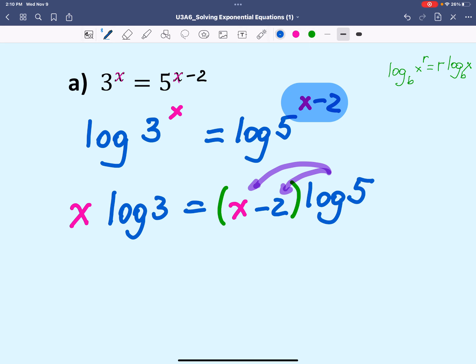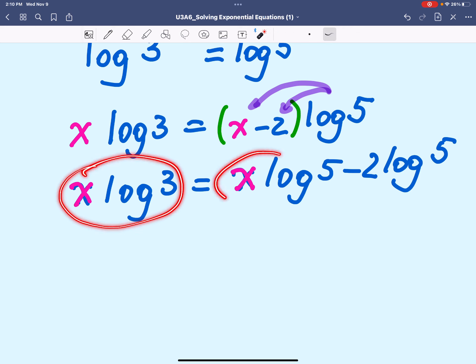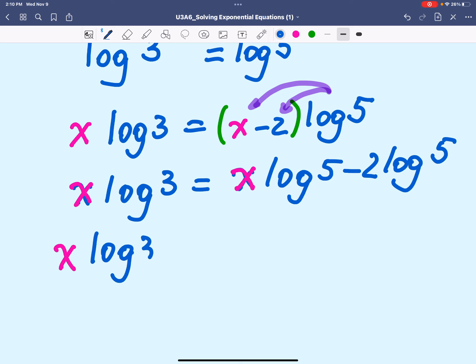So by expanding the right side of the equation, we have x log 3 equals x log 5 minus 2 log 5. The variable is located in two different terms. So in both terms, the variable will have a coefficient, a numerical coefficient in log form. In order to isolate x, we are going to bring the x terms to one side of the equation. This will come to the left, which means it will change the sign from positive to negative, so minus x log 5.